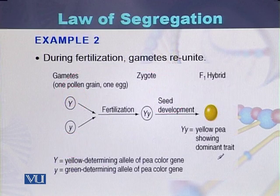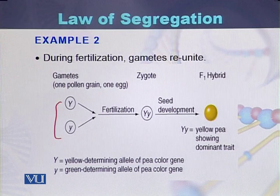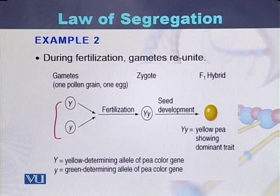During fertilization, both gametes join with each other. As a result, the F1 plants produced will have yellow color seeds. At the end, the gametes unite with each other.